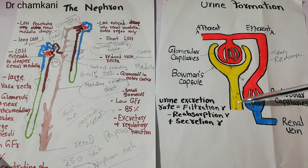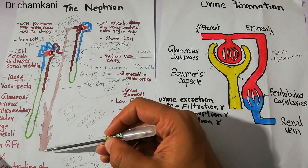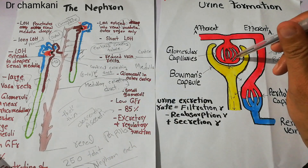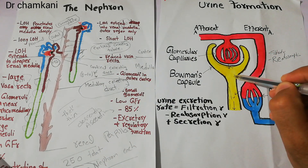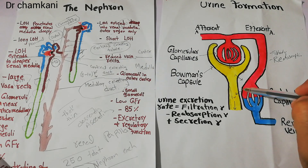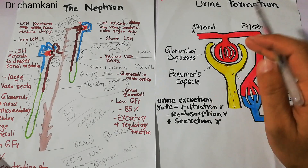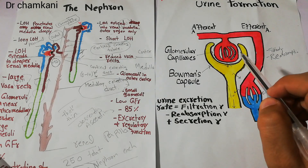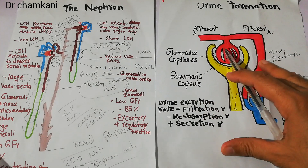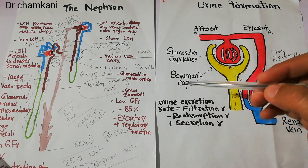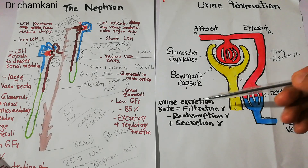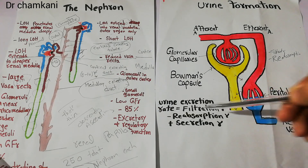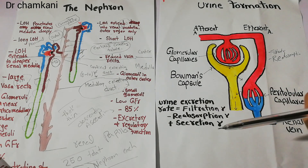The remaining waste will get excreted in the form of urine. So initially filtration occurs, then reabsorption and secretion occur simultaneously. The urine excretion rate can be summarized as: urine excretion = filtration rate − reabsorption rate + secretion rate.